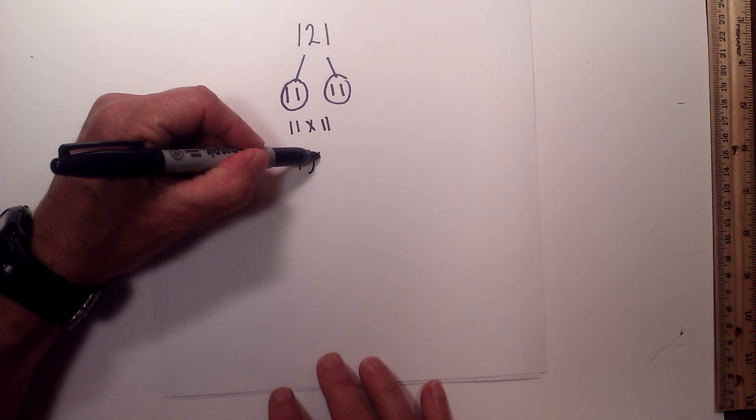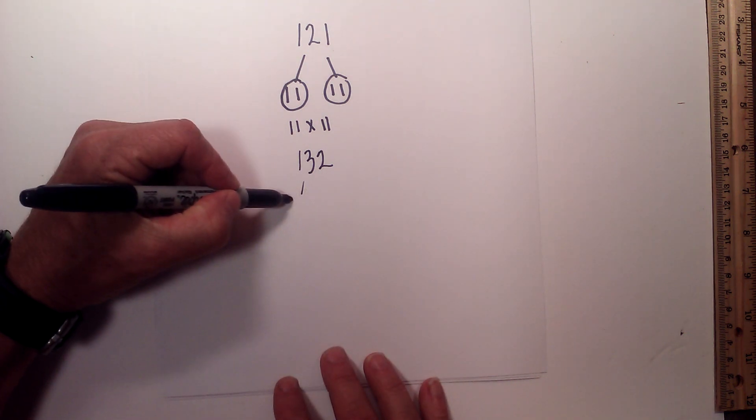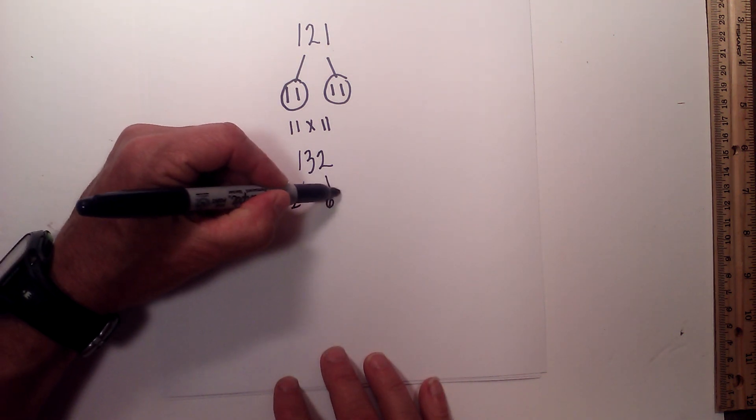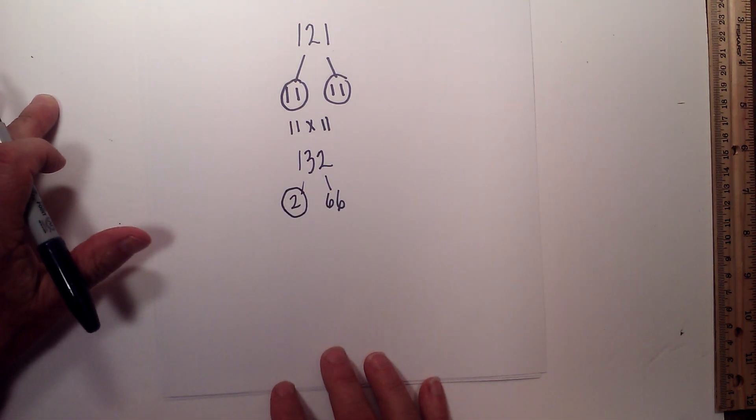So we have 132 and I will begin with 2 times 66. I will circle the 2 because 2 is prime.